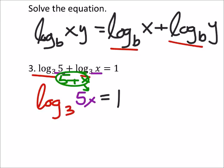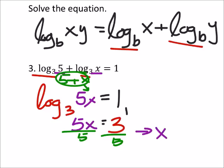So if I change this into exponential form, I've got three to the power of one equals the five x. In order to solve for x, I would just divide both sides by five, and we can see then that x is three-fifths.